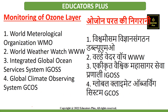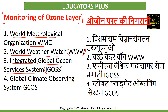The ozone layer is monitored by several organizations that form a network of information and communication about the atmosphere. These organizations include the World Meteorological Organization, the World Weather Watch, the Integrated Global Ocean Services System, and the Global Climate Observing System. All of these help in the monitoring of the ozone layer.